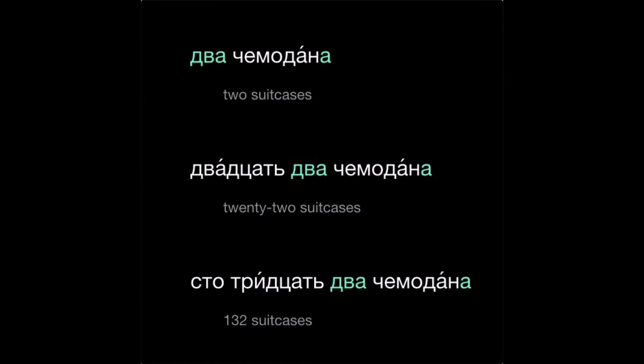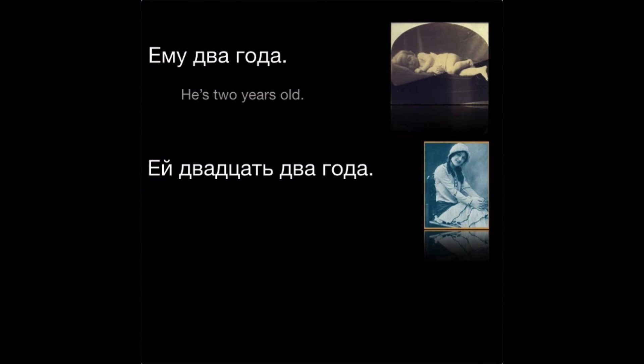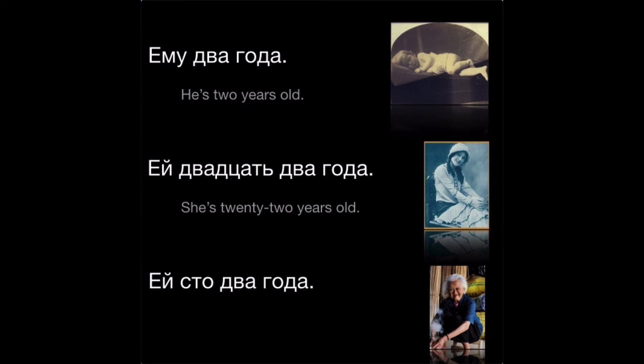We'll use the genitive singular for nouns that follow numbers ending in the forms два or две, три, or четыре. For example: Ему два года. Ей двадцать два года. Ей сто два года.